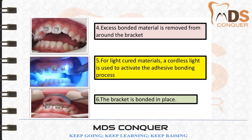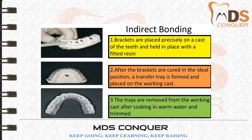In indirect bonding, the brackets are placed precisely on a cast and held in place with a fitted resin — a soluble resin used to hold the bracket on the cast. After the brackets are placed on the cast, a transfer tray is formed on the working cast, either from a thermoforming sheet using a Biostar machine or with silicone heavy-body putty material. The trays are then removed by soaking the cast in warm water to dissolve the fitted resin.